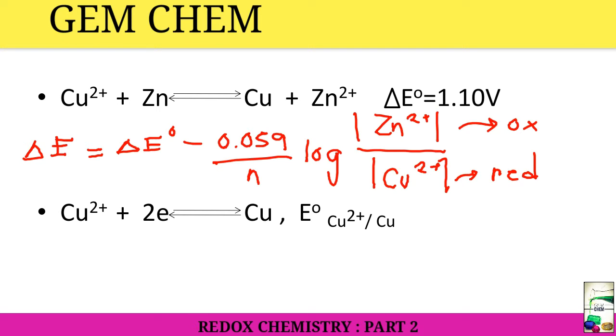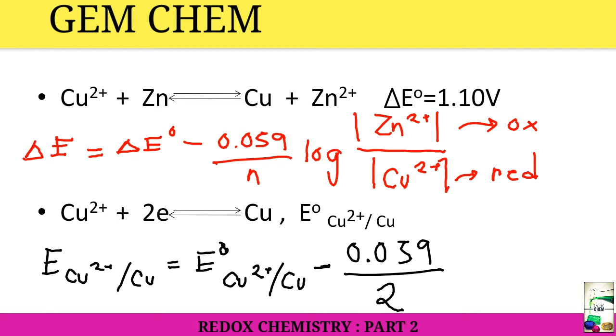Now we will do for the next one. E(Cu²⁺/Cu) = E⁰(Cu²⁺/Cu) minus 0.059 divided by 2 electrons transfer, log 1/[Cu²⁺]. We don't write the solid concentration because it is nearly equal to unity.